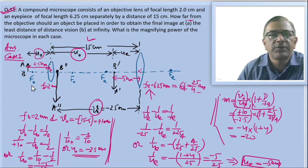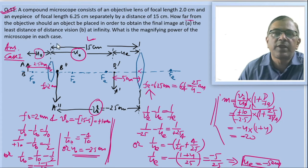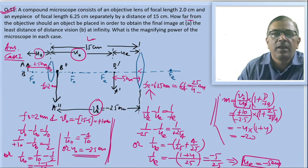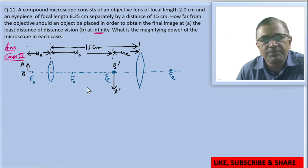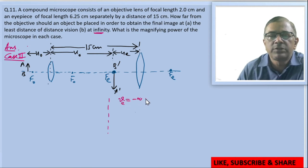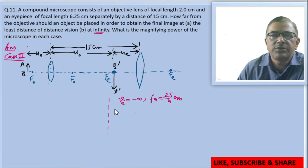This solves both quantities for Case 1. Now switching to Case 2, where the final image should be formed at infinity. For the final image to form at infinity, A-dash B-dash must coincide with the focal point of the eyepiece. For the eyepiece, v_e equals minus infinity and f_e equals 25 by 4 centimeter. Using lens formula: 1 by v_e minus 1 by u_e equals 1 by f_e.